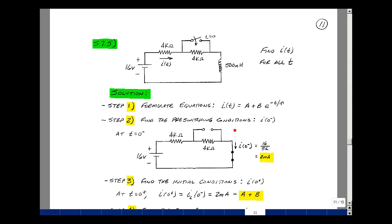Let's find the pre-switching conditions. So the switch was open prior to t equals zero. Let's assume that the inductor has reached steady state, so it's a short circuit. Then we can solve for the current in the 4k resistor, which is the same as the current in the inductor. With the open circuit here, I have 16 volts across 8k, so I get 2 milliamps.